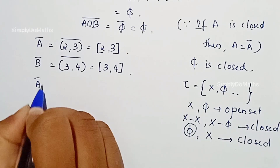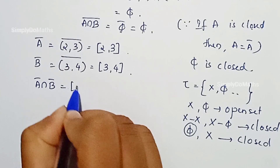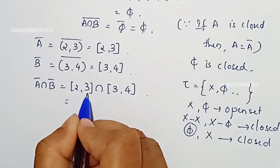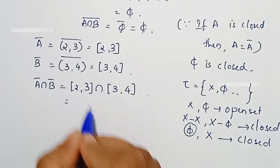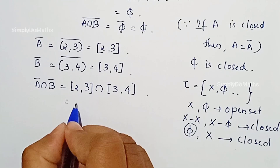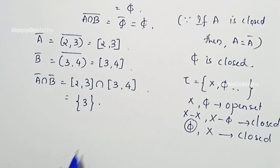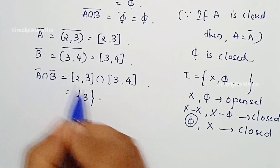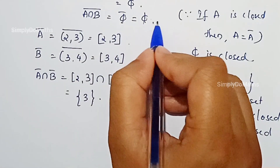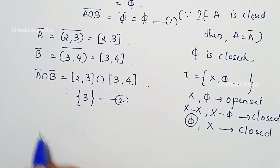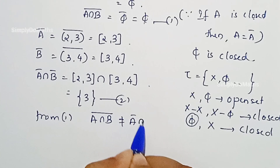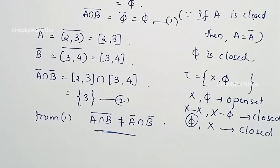Let us find A-bar intersection B-bar. That is, the closed interval [2, 3] intersection the closed interval [3, 4]. Since closed intervals are used, 3 is included in both. No other elements are common, so we are left with the singleton set {3}. Therefore A-bar intersection B-bar equals {3}, while the closure of A intersection B is empty. From these two equations, the closure of A intersection B is not equal to the closure of A intersection the closure of B. This proves the result.